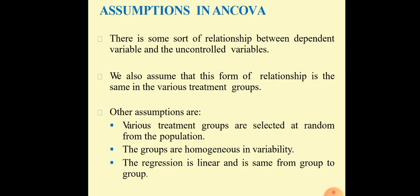Now assumptions in ANCOVA. Generally, what are the assumptions we are taking? There is some sort of relationship between the dependent variable and the uncontrolled variable. We also assume that this form of relationship is the same in the various treatment groups. Other assumptions are that various treatment groups are selected at random from the population, the groups are homogeneous in variability, and the regression is linear and is same from group to group.